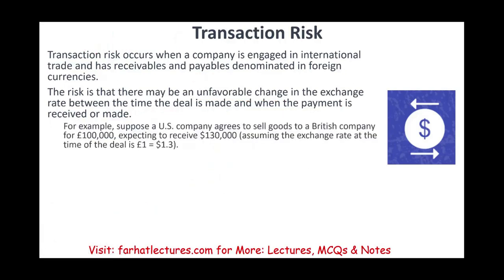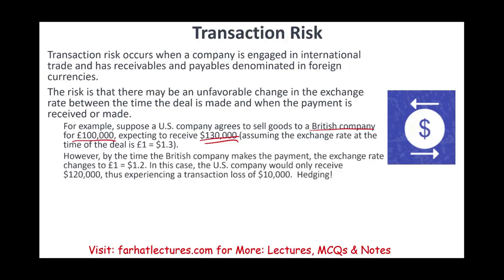Suppose a US company agrees to sell goods to a British company for 100,000 British pounds, expecting to receive $130,000 when the deal was made — each British pound giving $1.30. By the time the British company made the payment, the exchange rate had changed so each British pound could only buy $1.20. When you receive the 100,000 pounds and convert them to US dollars, you only get $120,000. You lost $10,000.